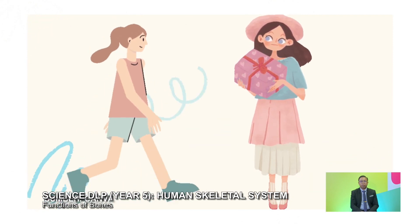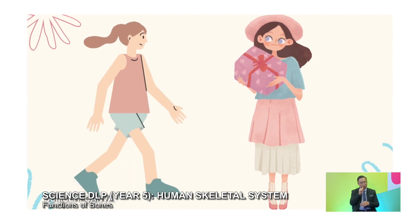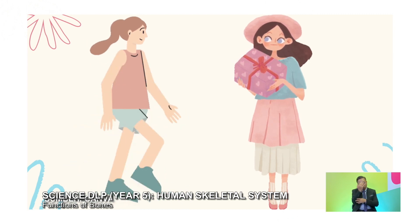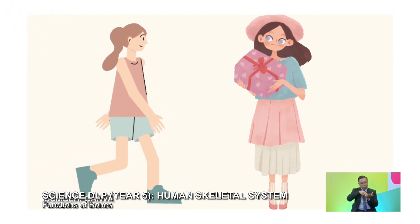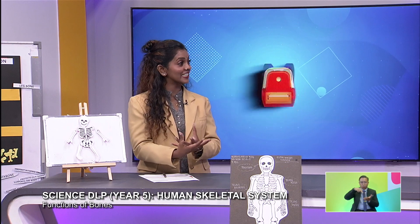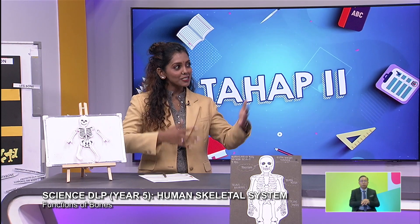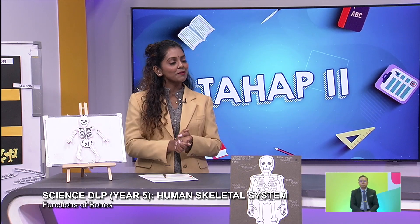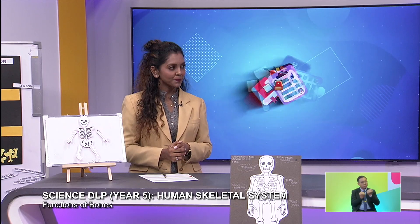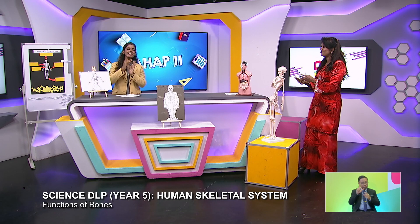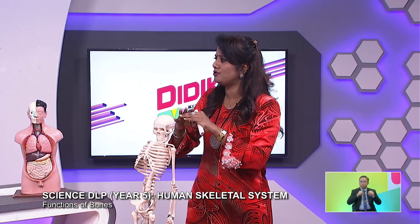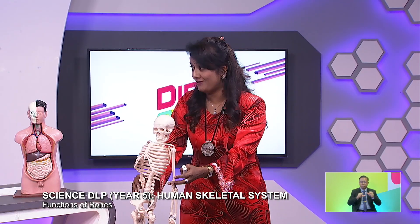What can you see here? I see a girl walking, and there's another girl holding a gift. Why can she walk? Why can she stand? She can walk because her leg bones are supporting her, and she can move her hands and hold the gift because her hand bones are supporting her. Exactly — that's the thing. I give you three stars for this.